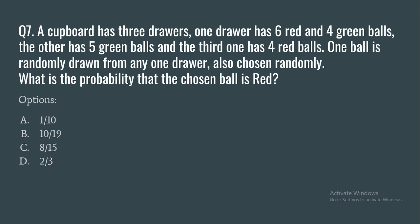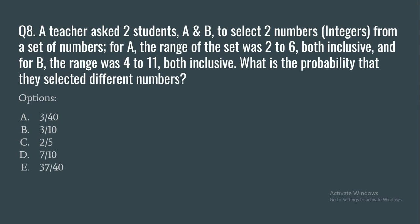Question 7: A cupboard has three drawers. One drawer has 6 red and 4 green balls, the second has 5 green balls, and the third has 4 red balls. One ball is randomly drawn from any randomly chosen drawer. What is the probability that the chosen ball is red? Options: 1/10, 10/19, 8/15, or 2/3.